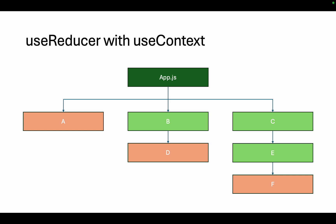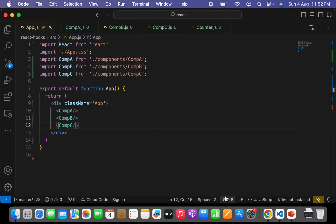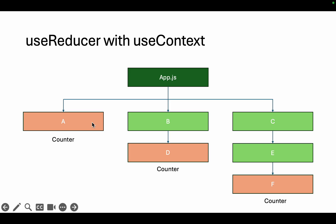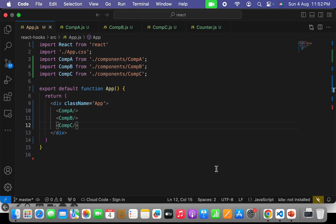Let's see the example. In my app.js file I have a requirement to increment and decrement the counter from components A, D, and F. Component A is on level one, component D is on level two, and component F is on level three — similar to the example we had implemented in our useContext tutorial. We will implement a main counter in app.js and later use the functionality of that counter in components A, D, and F using useContext. Let's go to the code. I had already created components according to our example.